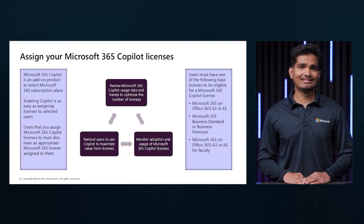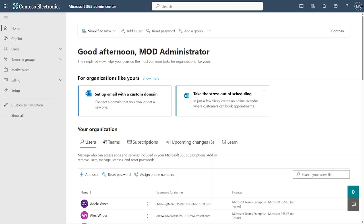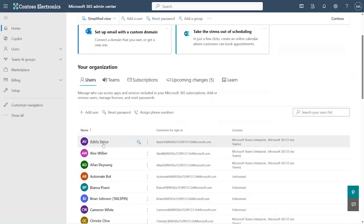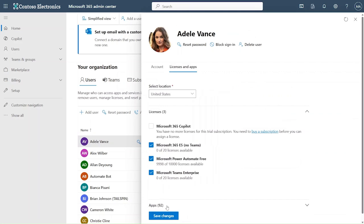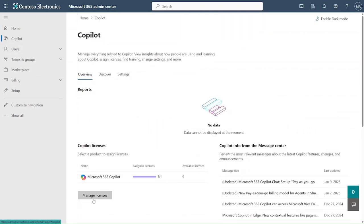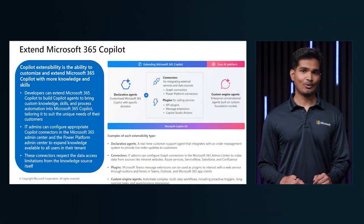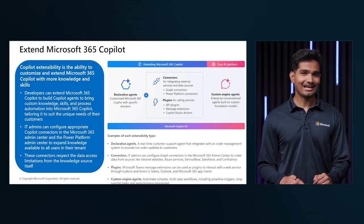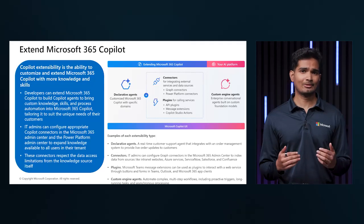Microsoft 365 Copilot can be added on top of a Microsoft 365 subscription plan — enabling Copilot is as easy as assigning licenses to selected users. Users assigned M365 Copilot licenses need to have an appropriate M365 license assigned to them, such as E3 or E5. Monitor Copilot usage data to optimize the number of licenses handed out to employees. You can extend Copilot with more knowledge and skills: admins can configure appropriate Copilot connectors in the M365 Admin Center and the Power Platform Admin Center. Connectors allow for integrating external services and data sources; Graph connectors and Power Platform connectors are good examples.